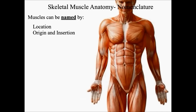Examples of muscles named by location include the pectoralis major and the biceps brachii. 'Pectoralis' refers to the pectorals — pectoral meaning chest — and 'brachii' refers to the arm. An example of a muscle named by its origin and insertion would be the brachioradialis, which attaches to the brachium (arm) and to the radius (radialis).